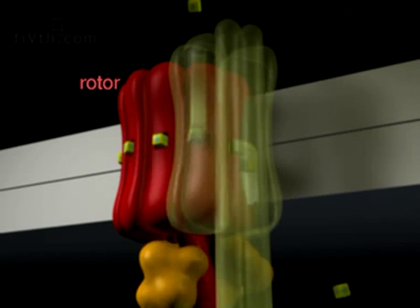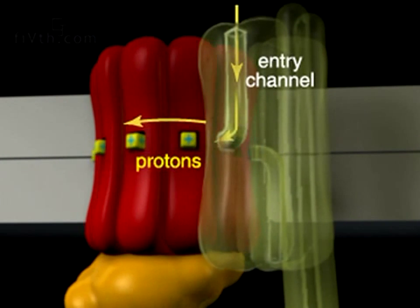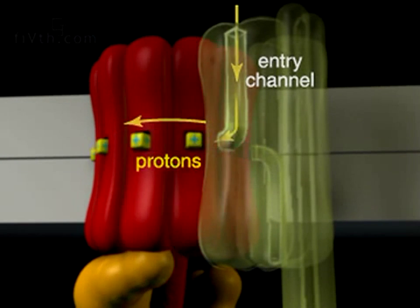The flow of protons down their electrochemical gradient drives a rotor that lies in the membrane. It is thought that protons flow through an entry open to one side of the membrane and bind to rotor subunits.